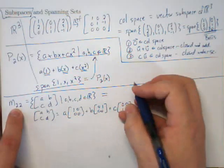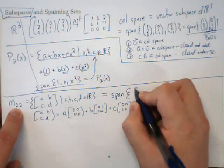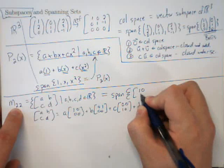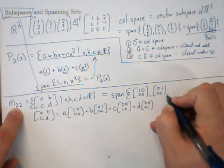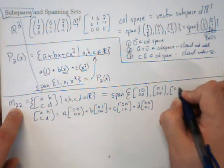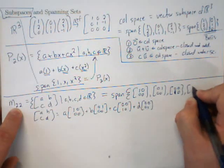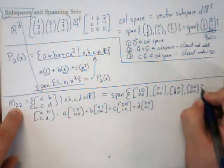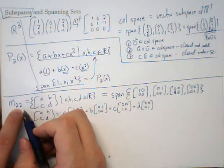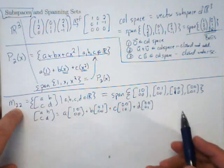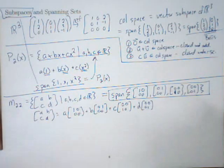So the set of all 2×2 matrices is really the span of four matrices: [1,0;0,0], [0,1;0,0], [0,0;1,0], and [0,0;0,1]. Therefore M22 is a subspace — it's a vector space spanned by those four vectors.